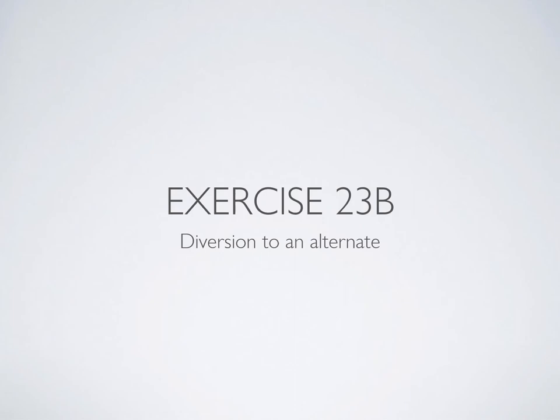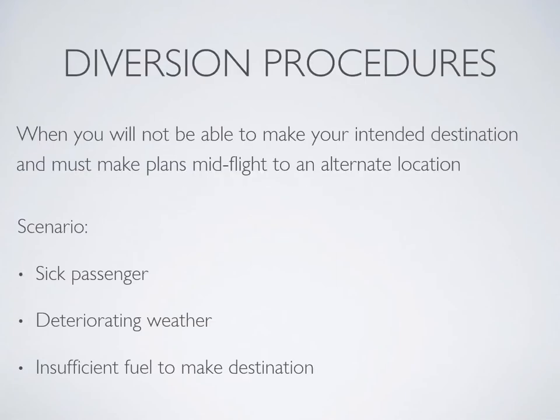Welcome to the ground instruction for Exercise 23, navigation, focusing on the diversion exercise. You can begin by thinking of diversions as an in-the-moment decision. You should always be aware of your closest airports and know what you would do in the event of a diversion. A diversion could arise due to many things, such as an ill passenger, deteriorating weather, or insufficient fuel to make destination.